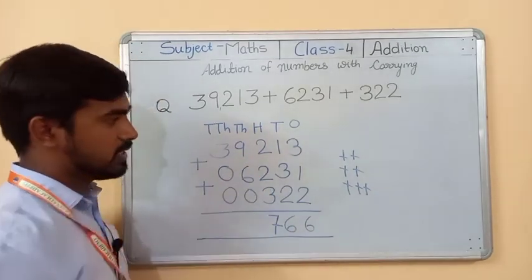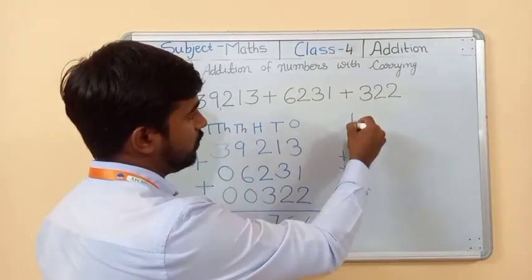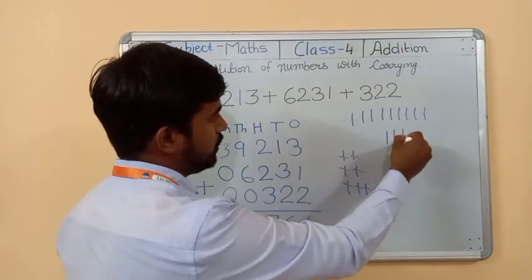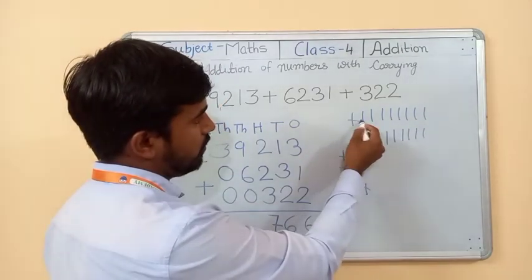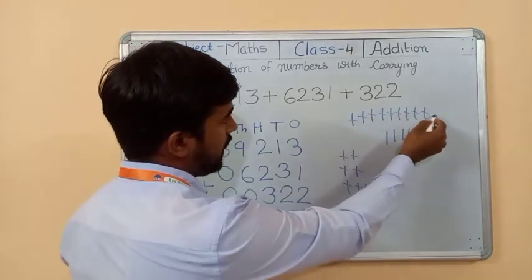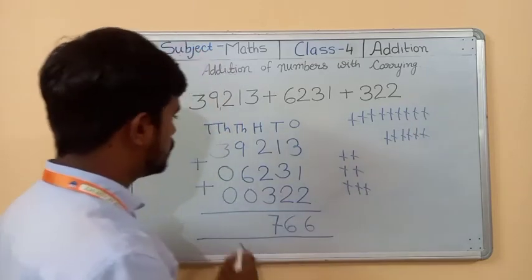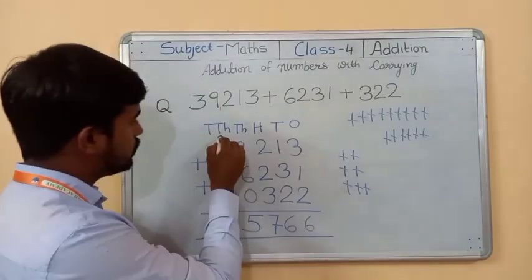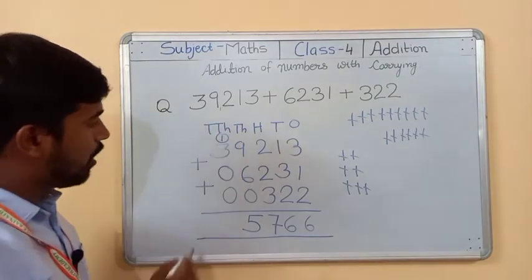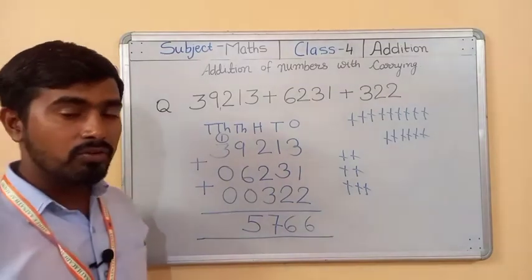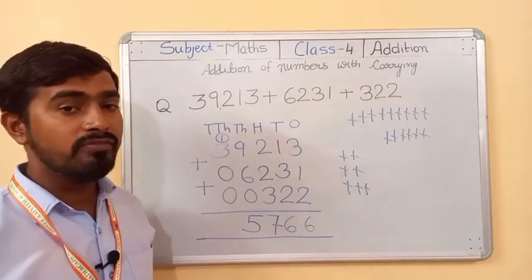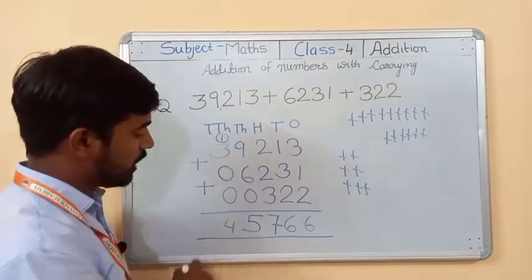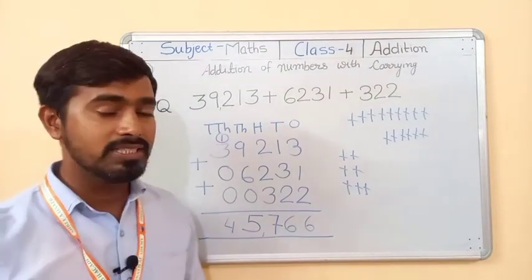Now nine plus six. Draw nine lines, then six lines, count them all — that gives fifteen. Nine plus six equals fifteen. Write five here; carry goes to the next number. Now three plus zero plus zero plus zero equals three, because zero has no value. Plus this carry equals four. So your answer is forty-five thousand seven hundred and sixty-six.